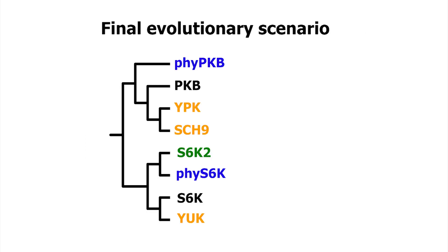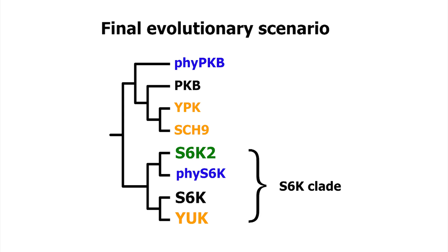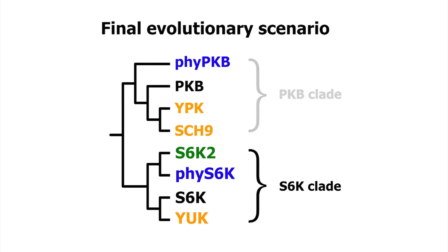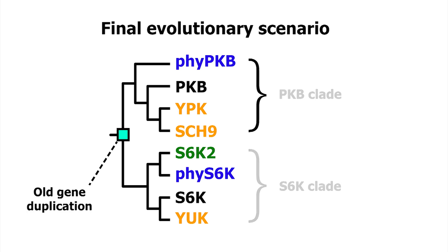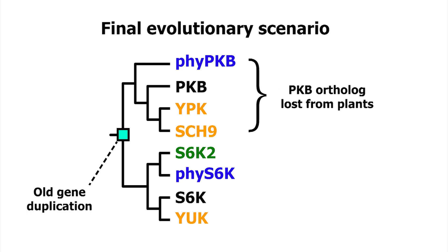Nice. NUK indeed appears to be the actual ortholog of S6K. And plant S6K2 now also firmly sits together with S6K. Because we find Phytophthora's sequence both close to S6K and to PKB, this likely reflects an old duplication.